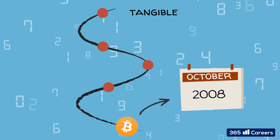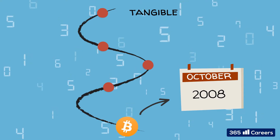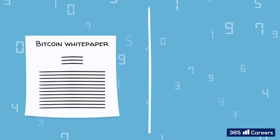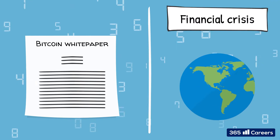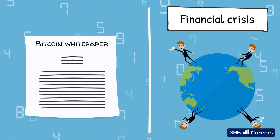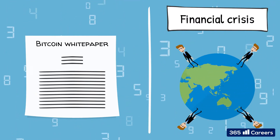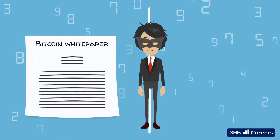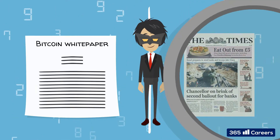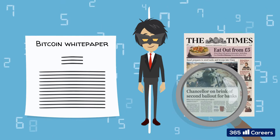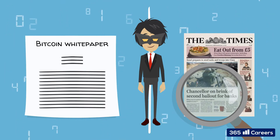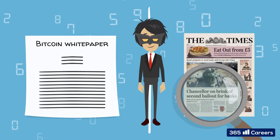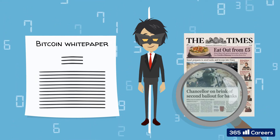The Bitcoin White Paper was published in October 2008, the year when the global economic and financial crisis hit the world. Coincidence or not, Bitcoin seems perfectly designed to address many deficiencies of fiat money. Perhaps a little-known fact is that the genesis block of the Bitcoin blockchain, where its first transaction is recorded, contains a hidden message by its creator, Satoshi Nakamoto.